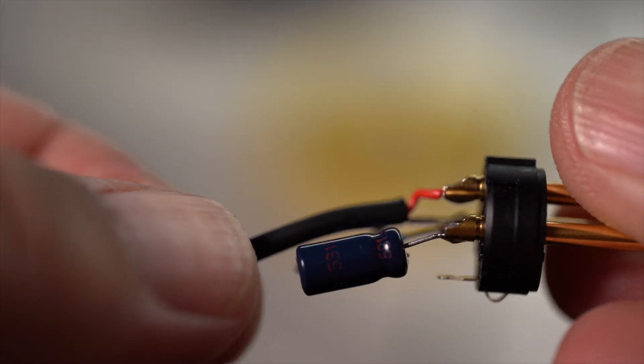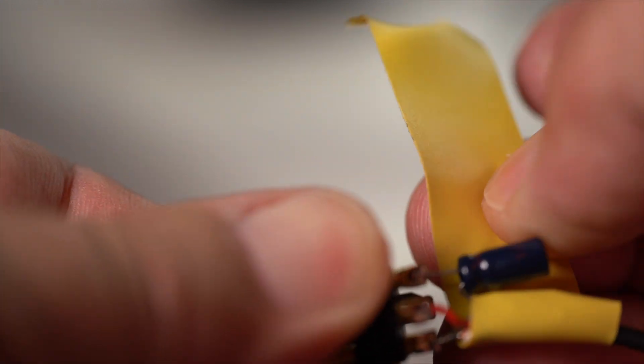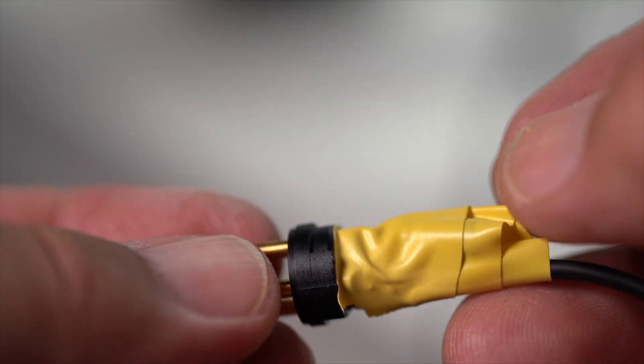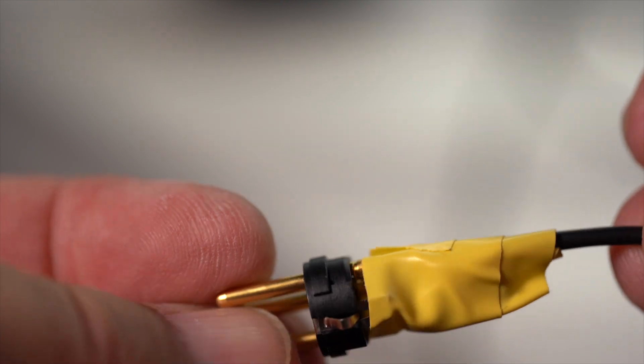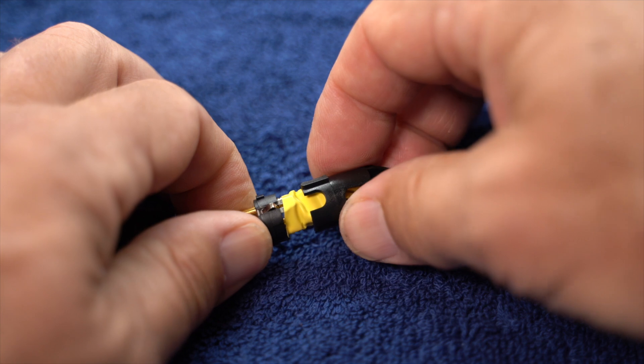I insulate the internals with a small piece of electrical tape starting between the capacitor body and the resistor capacitor junction and then wrapping around all the components. Assemble the connector outer portion and then test.